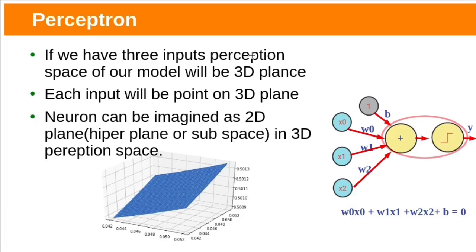Suppose if we have three inputs, Perceptron space of our model will be 3D plane. Then, each input will be point on 3D plane. Neuron or Perceptron can be imagined as hyperplane. In this case, hyperplane would be 2D plane in 3D Perceptron space. This 2D plane will divide this 3D space into two parts. Then Perceptron equation would be w0x0 plus w1x1 plus w2x2 plus b equal to 0.